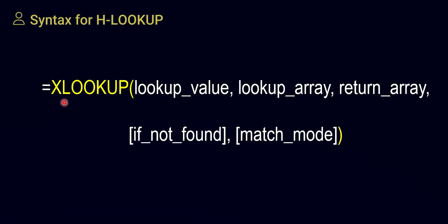Now let's understand XLOOKUP. The syntax is slightly different. In VLOOKUP and HLOOKUP you have a lookup value and a lookup array, but in XLOOKUP there is an additional return array. The way you operate the formula is also very different. XLOOKUP is a very important lookup function because it overcomes the kinds of errors we usually get with VLOOKUP and HLOOKUP. Instead of explaining the syntax, I'll directly show you the Excel window.